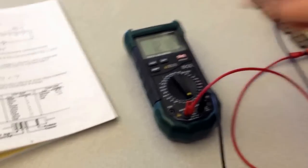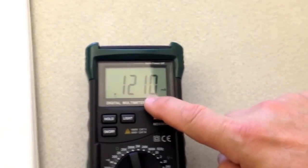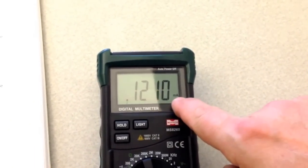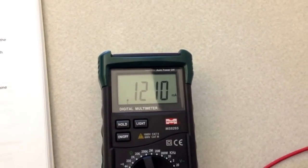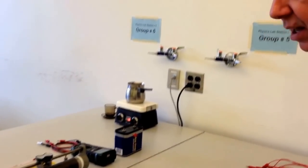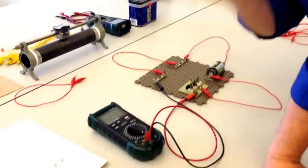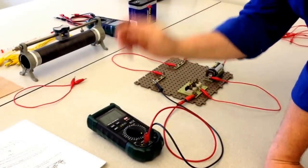Now, what is the reading? It's 0.1210 milliamps. That means it's 0.1210 times 10 to the minus 3 amps.